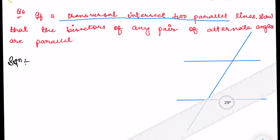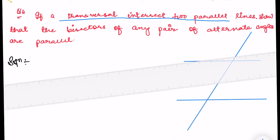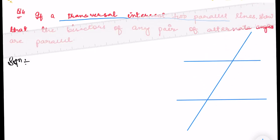So this is the transversal which intersects these two parallel lines. I need to show that the bisector of any pair of alternate angles are parallel. So what are the alternate angles here? This angle and this angle are alternate; these angles and these angles are also alternate. So take the bisector of any two alternate angles.